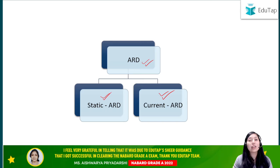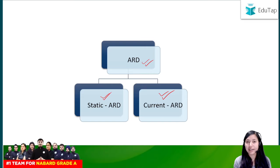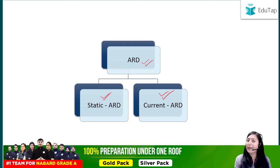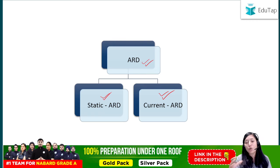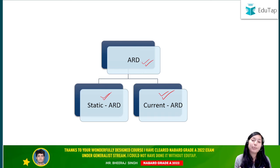Moving on to current ARD — basically, all the current developments happening in agriculture and the rural sector comprise your current ARD. Be it any scheme released, any report releasing showing data, or any MOU signed or initiative taken — all such things happening for the development of agriculture and the rural sector comprise your current ARD.